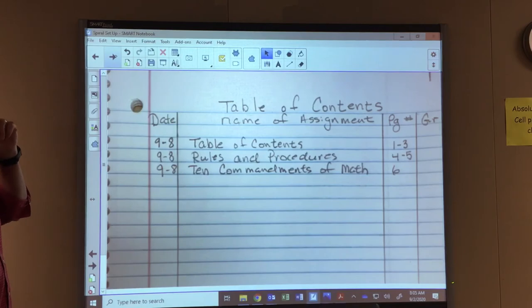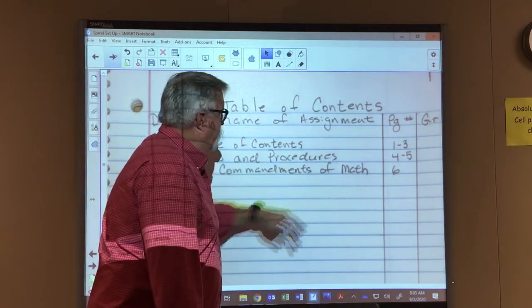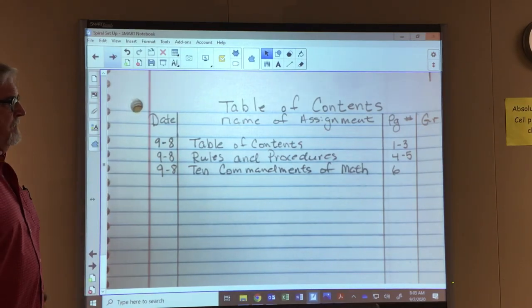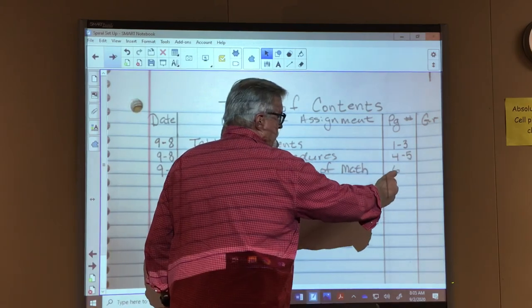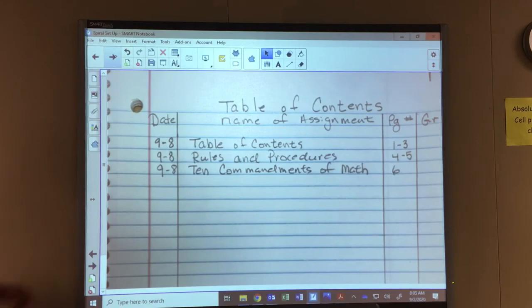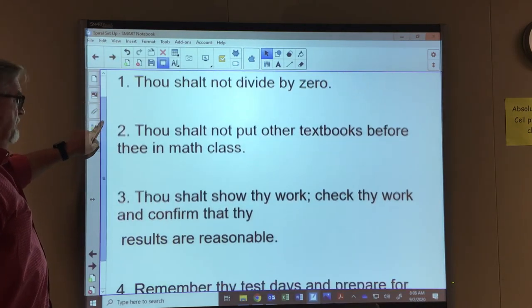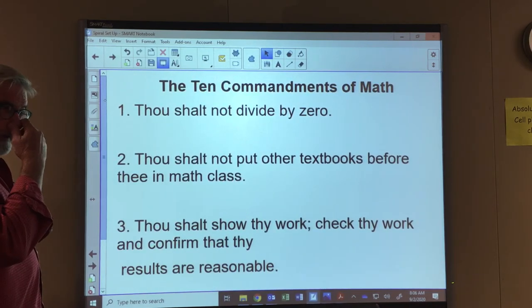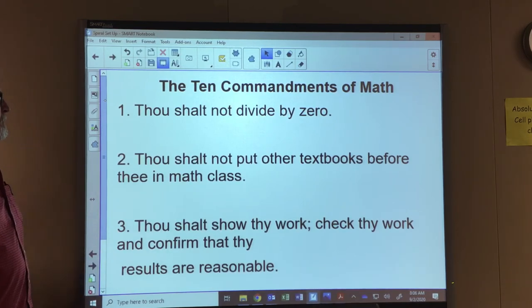Next thing we need to put on our table of contents is the ten commandments of math. We're still doing this today, so nine eight. Like I said, it took me two pages to get the rules and procedures, so I'm going to be starting this on page six. The ten commandments—I'm going to go through these and then you can back up and get them copied down. There's also a link in canvas so you can get a copy of this.